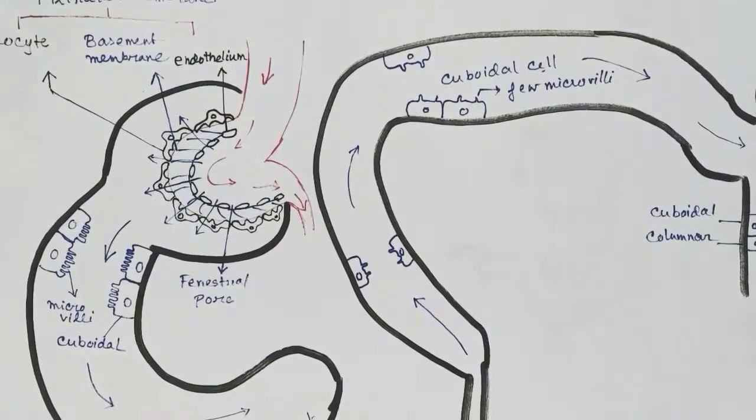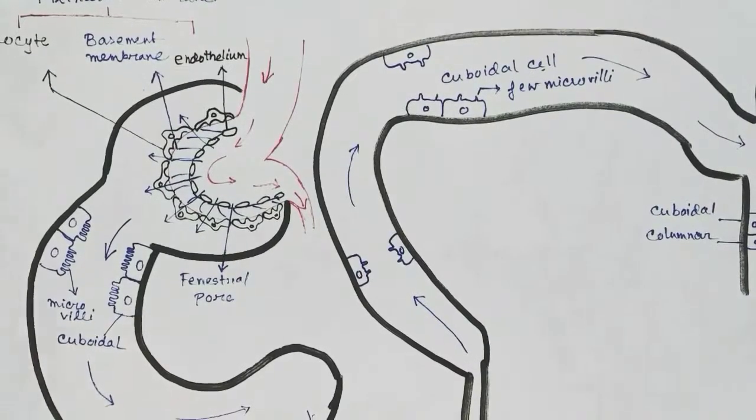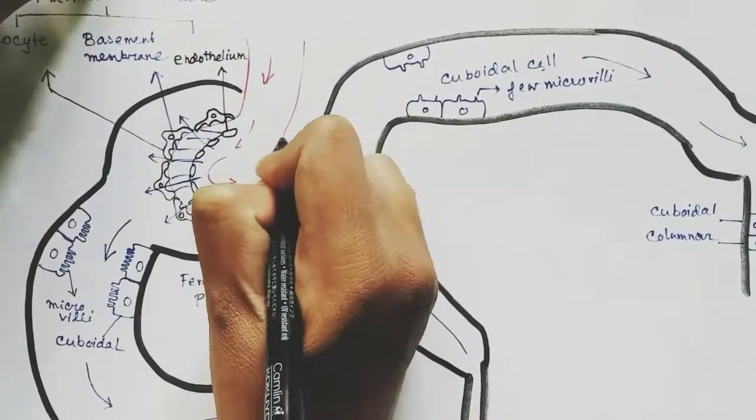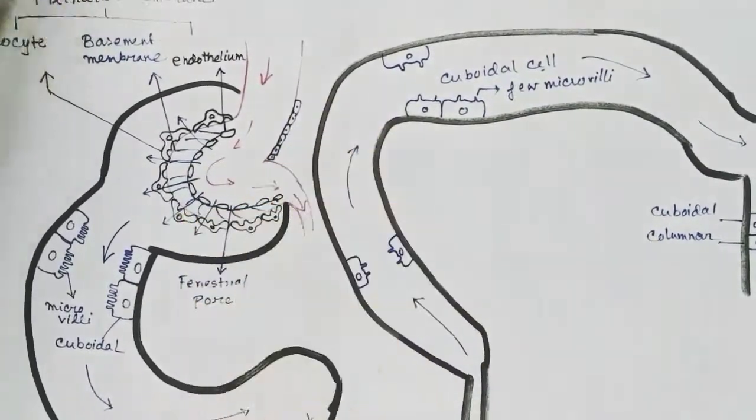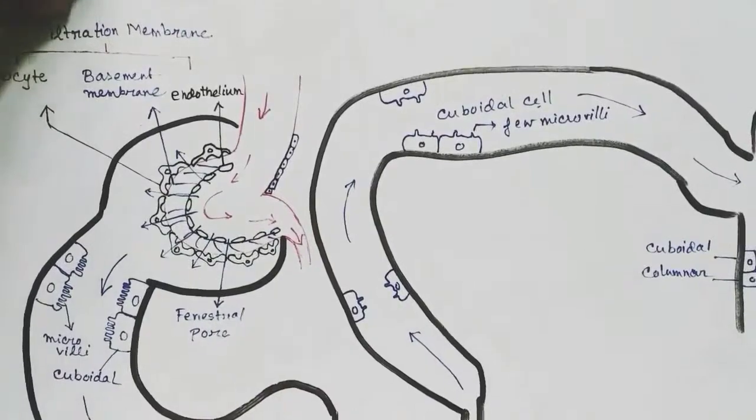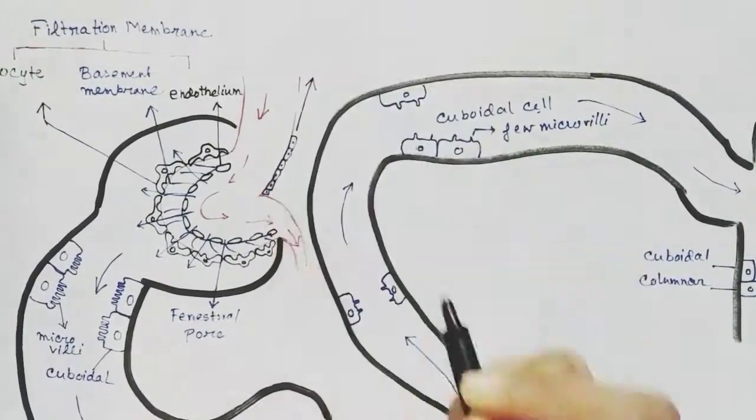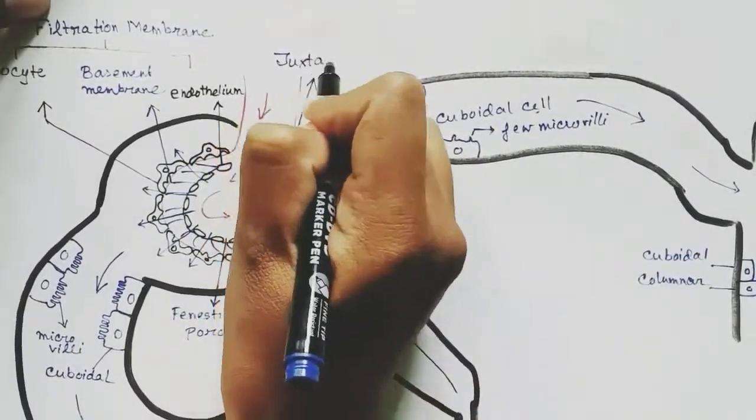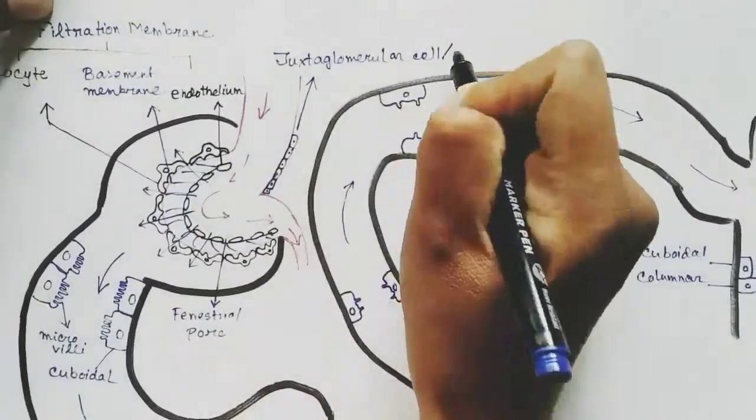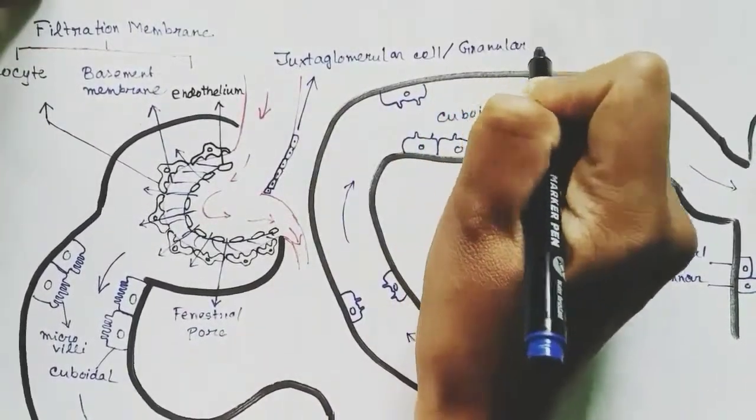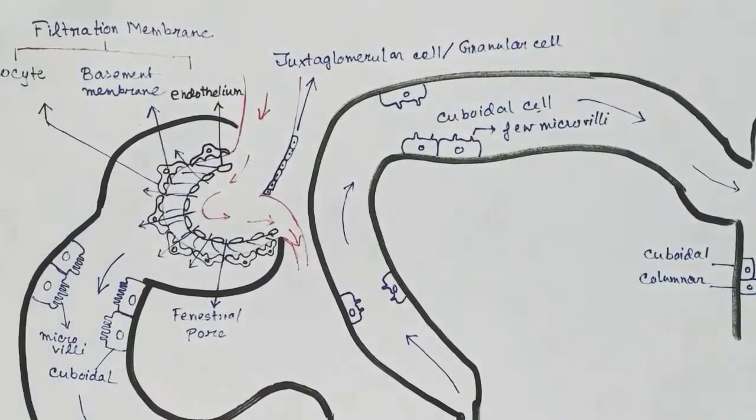The afferent arteriole has special cells on it called the juxtaglomerular cells or granular cells. These cells secrete renin when blood pressure is low, and renin increases blood pressure.